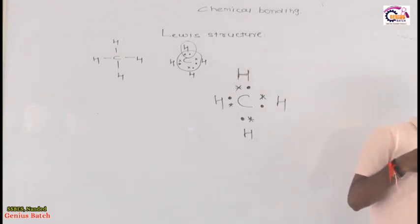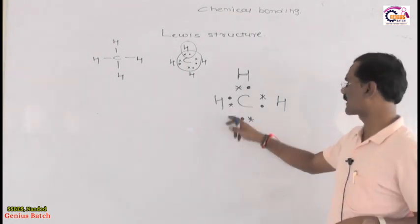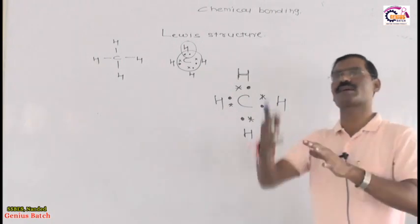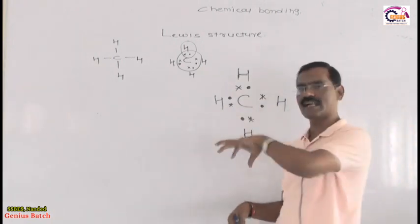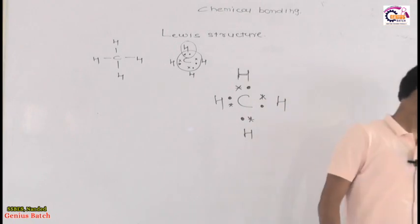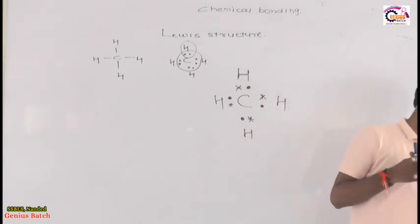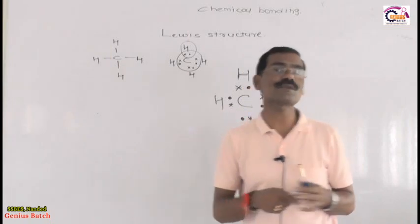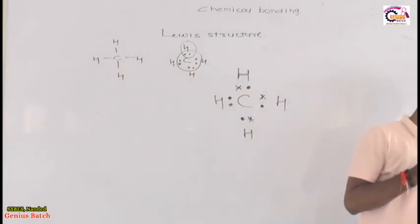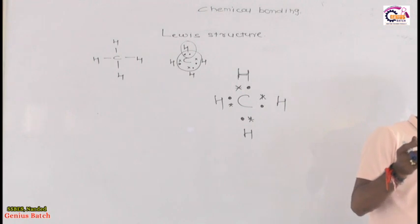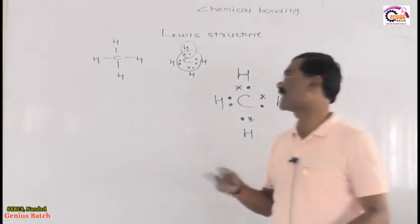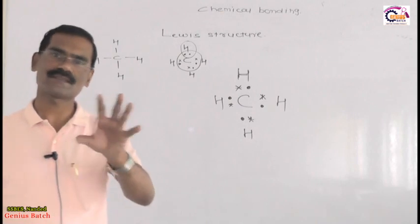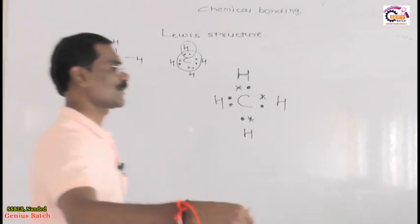Third point: structures in which valence electrons are represented by dots are called Lewis structures. Fourth point: the structure represented by a line or dash is known as the Couper structure (C-O-U-P-E-R). These are the interesting phenomena related to Lewis structure.